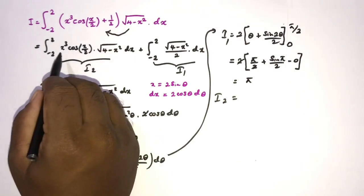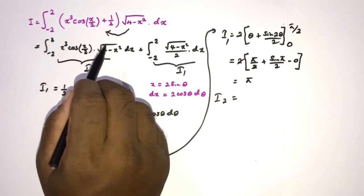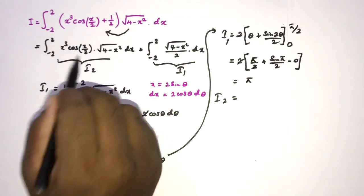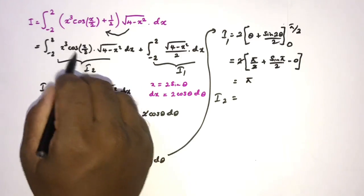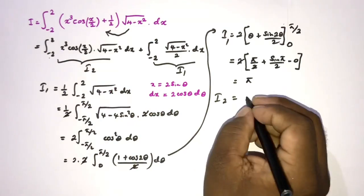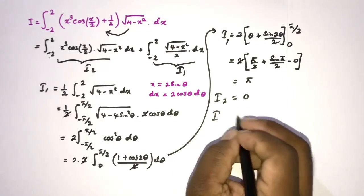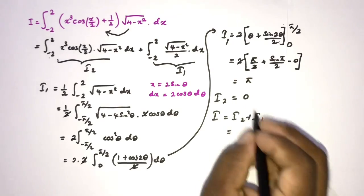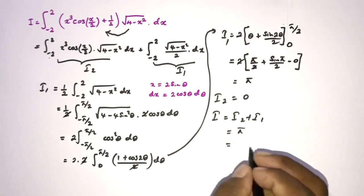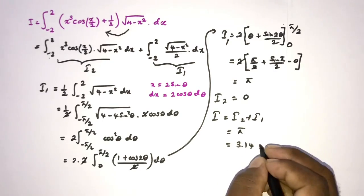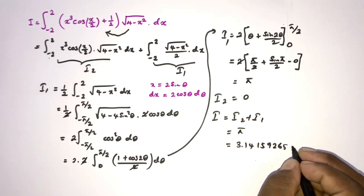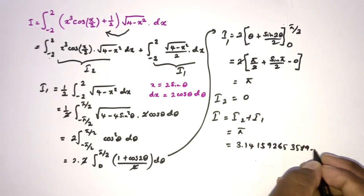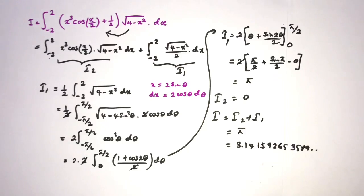Now for I1: x cubed cosine of x over 2 times the square root of 4 minus x squared is an odd function. Integrating an odd function from minus 2 to 2 gives 0. Therefore the total integral I equals I1 plus I2 equals 0 plus pi equals pi, approximately 3.14159. Thank you for watching.